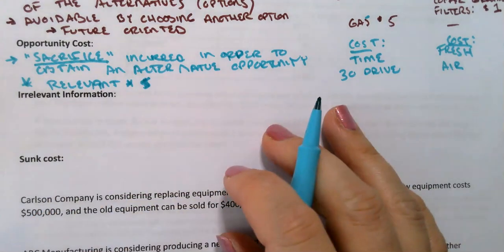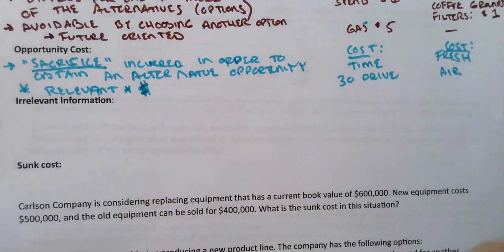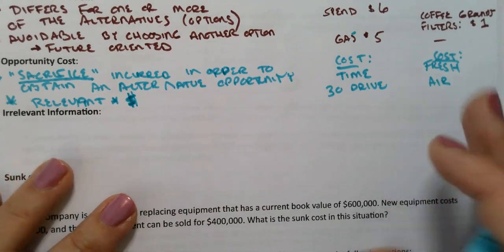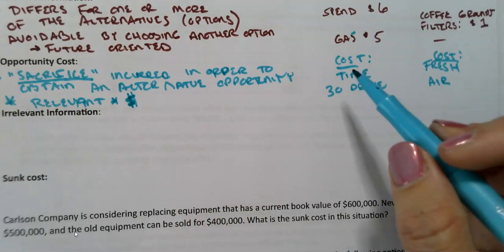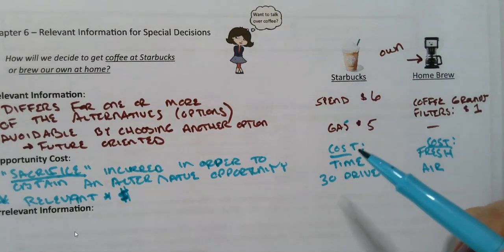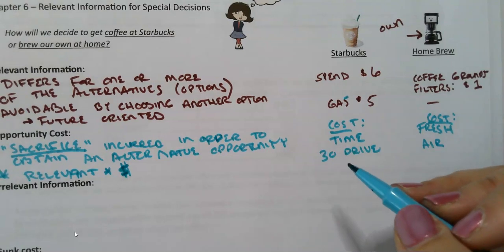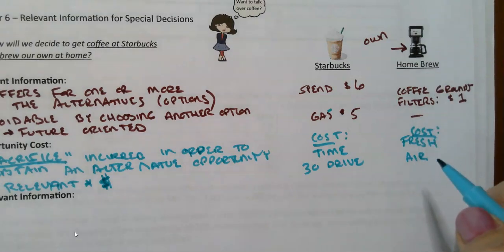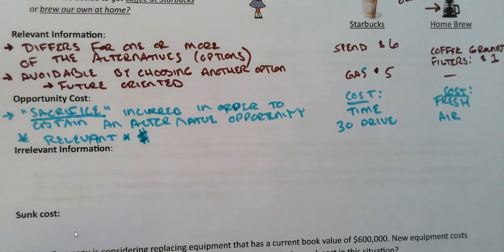Sometimes our relevant information is not quantitative — it's not a numerical amount. We deal a lot with numbers and costs, but sometimes we have to consider things like time or quality of production. Going back to our coffee example: if we drive to Starbucks from 30 minutes away, we're giving up 30 minutes of time. On the flip side, staying home means giving up the opportunity to get out, get fresh air, see people, and go for a drive. You can't put a dollar amount on those things, but they are relevant when making your decision.